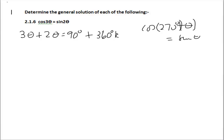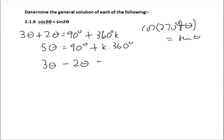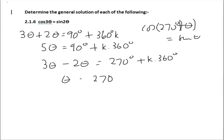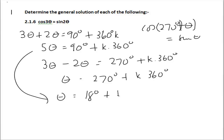So 3θ - 2θ must give us 270 degrees plus k times 360 degrees. That gives θ = 270° + k·360°. The other answer is θ = 18° + k·72°.